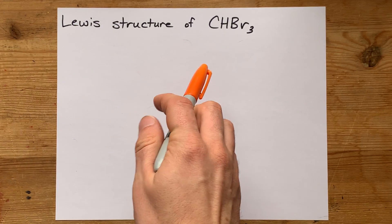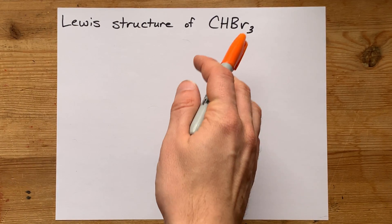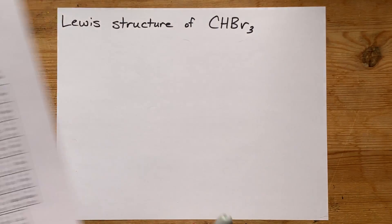We're going to draw the Lewis structure for CHBr3, which is tribromomethane.